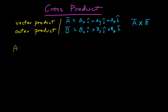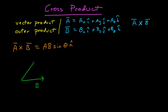We can solve that a couple of ways. The first way is that A cross B is equal to a vector, and the magnitude of that vector is the magnitude of A times the magnitude of B times the sine of an angle. If we place A and B tail to tail, then theta is the angle between them.